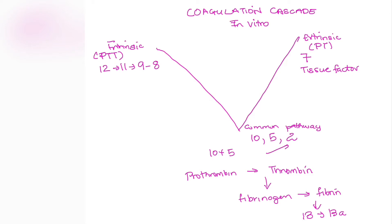To recap: in the intrinsic pathway, 12 activates 11, which activates 9, which activates 8 — counting down but skipping 10. In the extrinsic pathway, it's just factor 7 and tissue factor. They converge on the common pathway where factors 10 and 5 activate prothrombin (factor 2) to thrombin, then thrombin activates fibrinogen (factor 1) to fibrin, and factor 13 cross-links the fibrin clot.